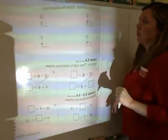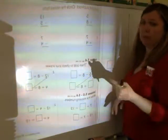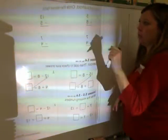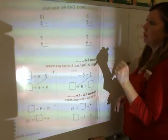The directions, the first part, are add and subtract and circle the related facts. So you're not just giving an answer here, you also have to decide which ones are related.